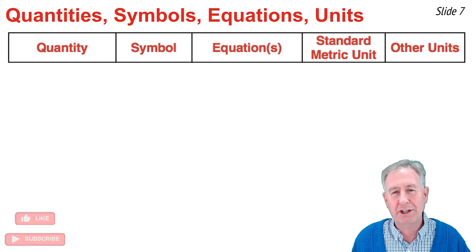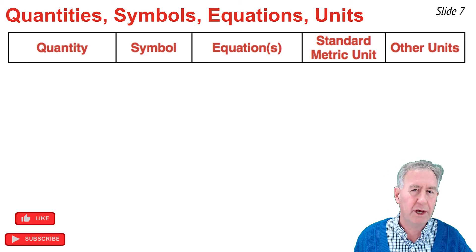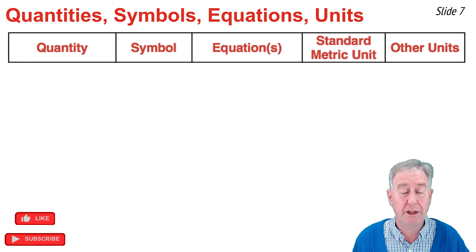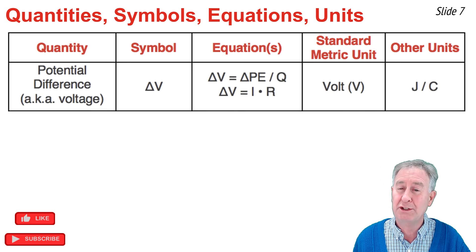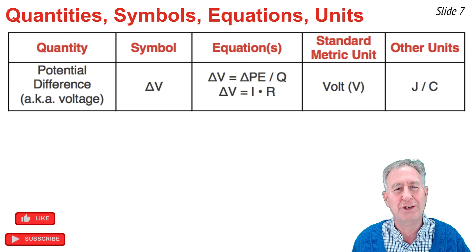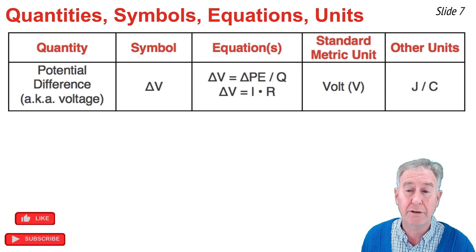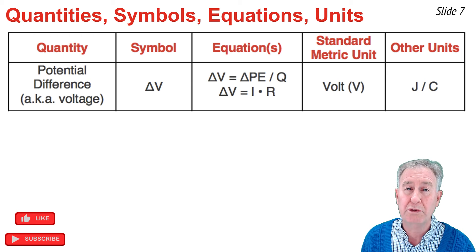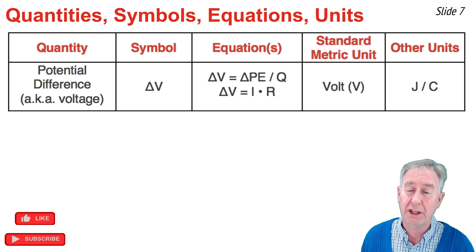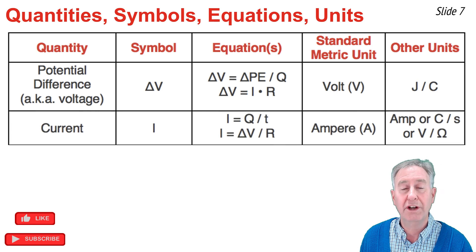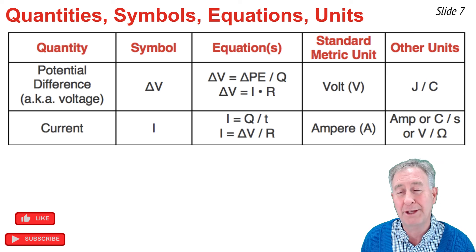About this time in an electric circuits unit, students are beginning to get a bit overwhelmed by all the quantities, symbols, equations, and units. So this slide is a great summary. You might want to take a screenshot and use it throughout your circuit studies. First, there's potential difference: symbol delta V, unit is the volt, also expressed as joules per coulomb. There are a couple of equations relating delta V to various quantities. Here is the current equation, symbol I, with a couple of equations. The ampere, or amp, abbreviated A, is the standard unit, also equal to coulomb per second or volt per ohm.